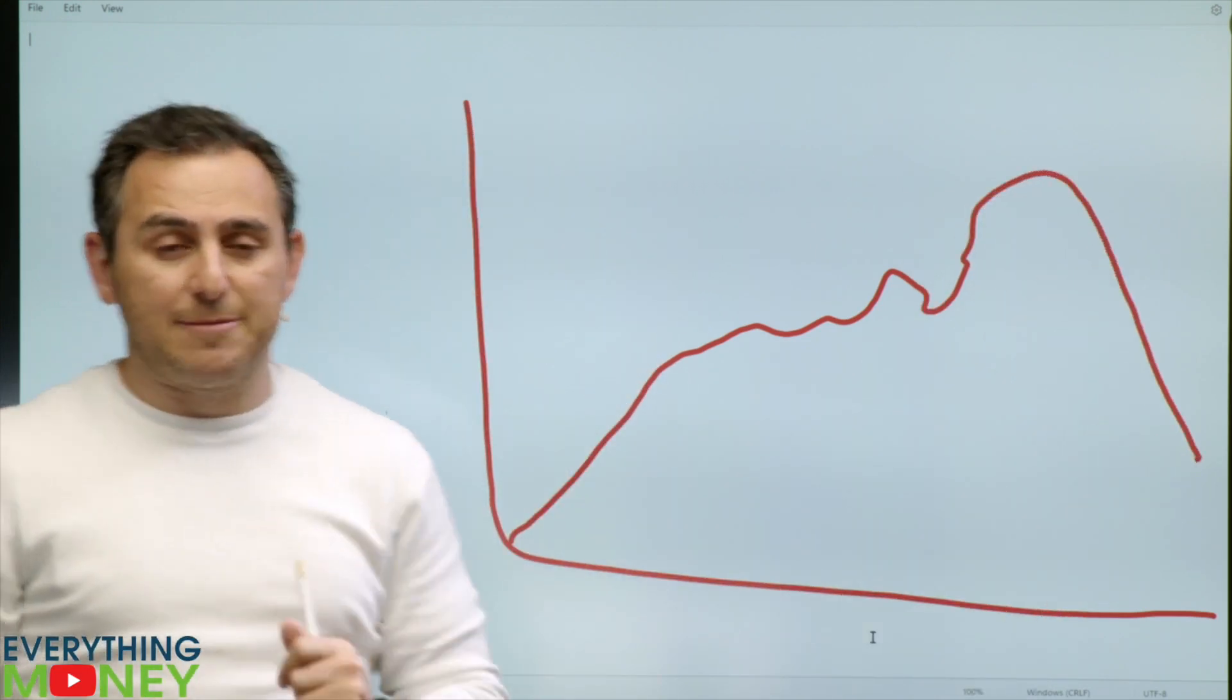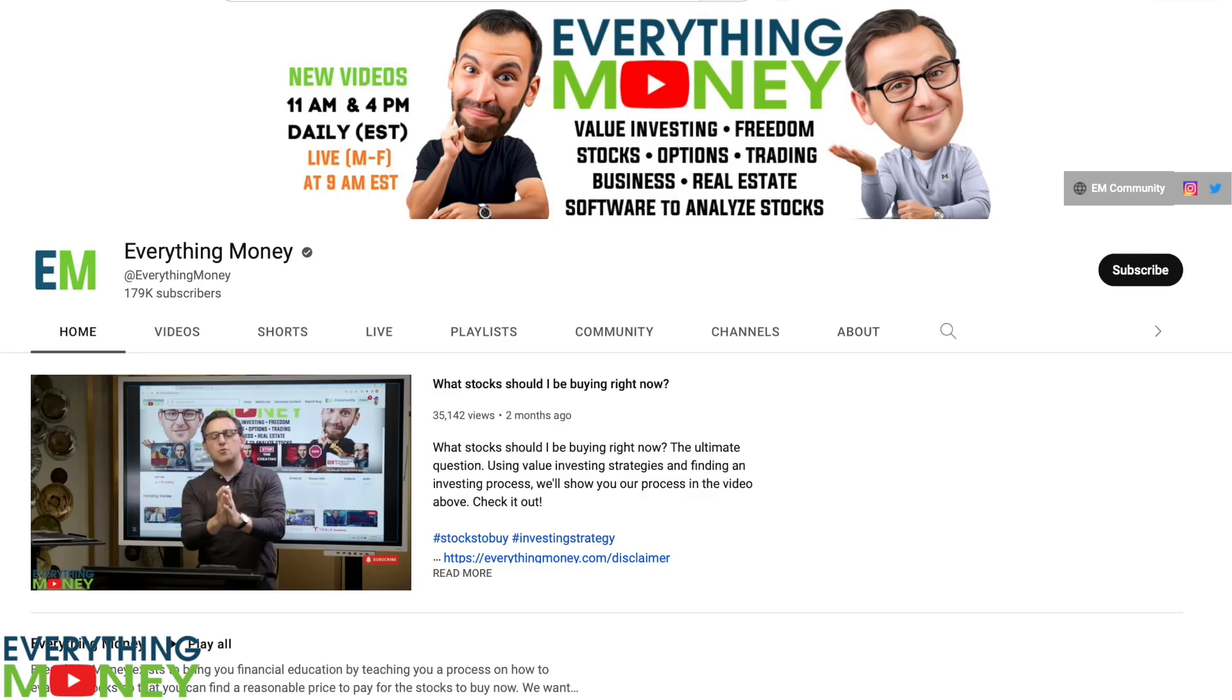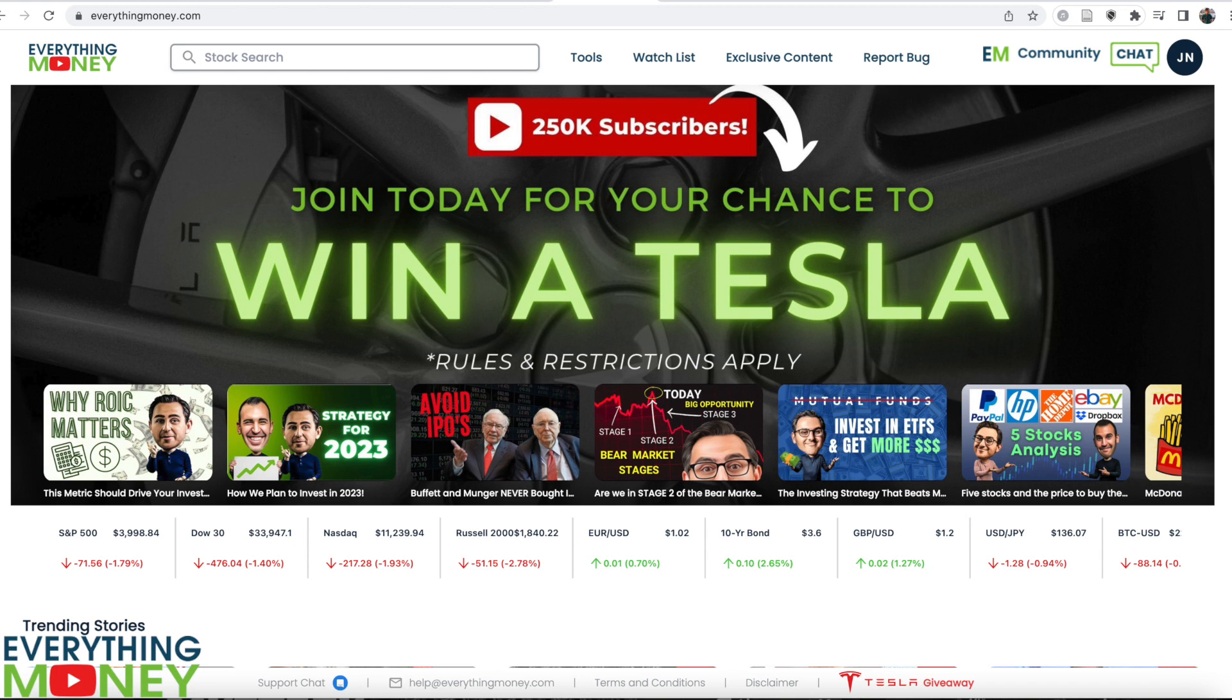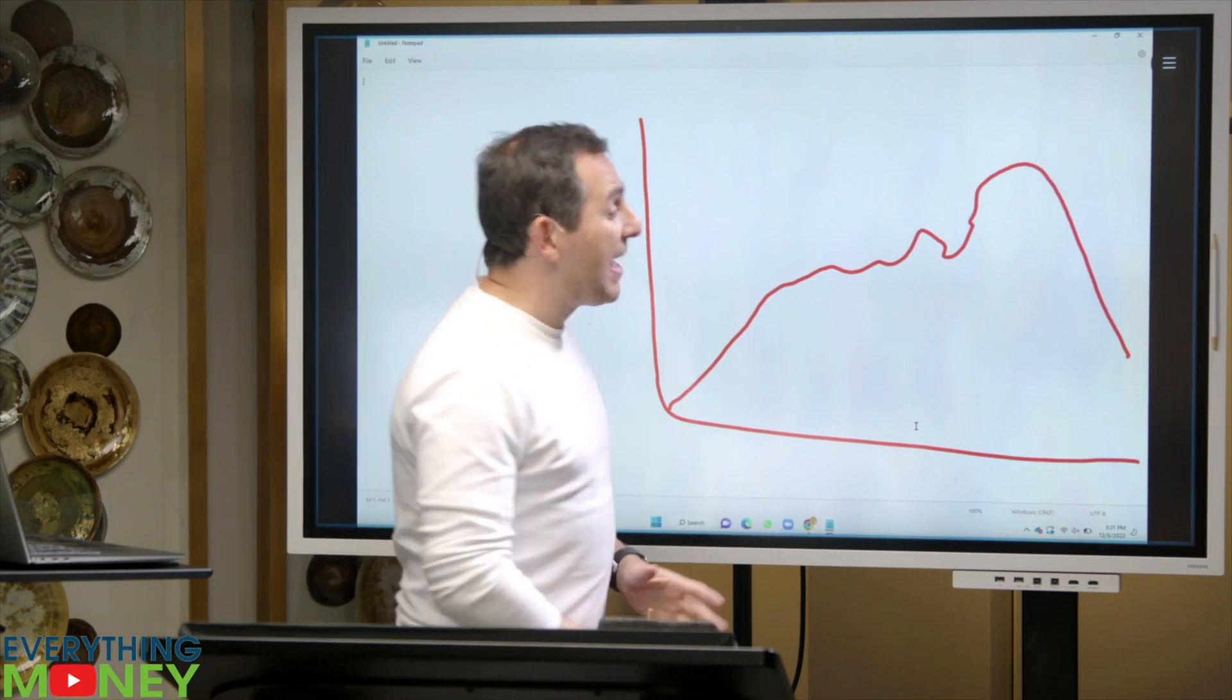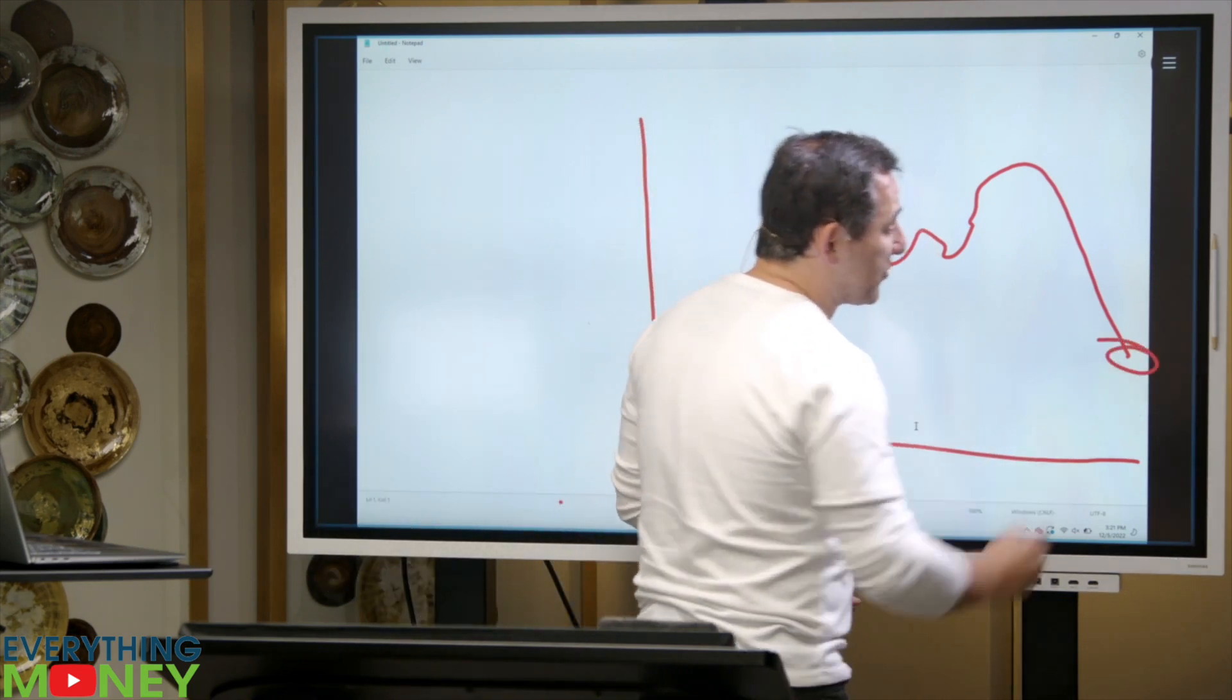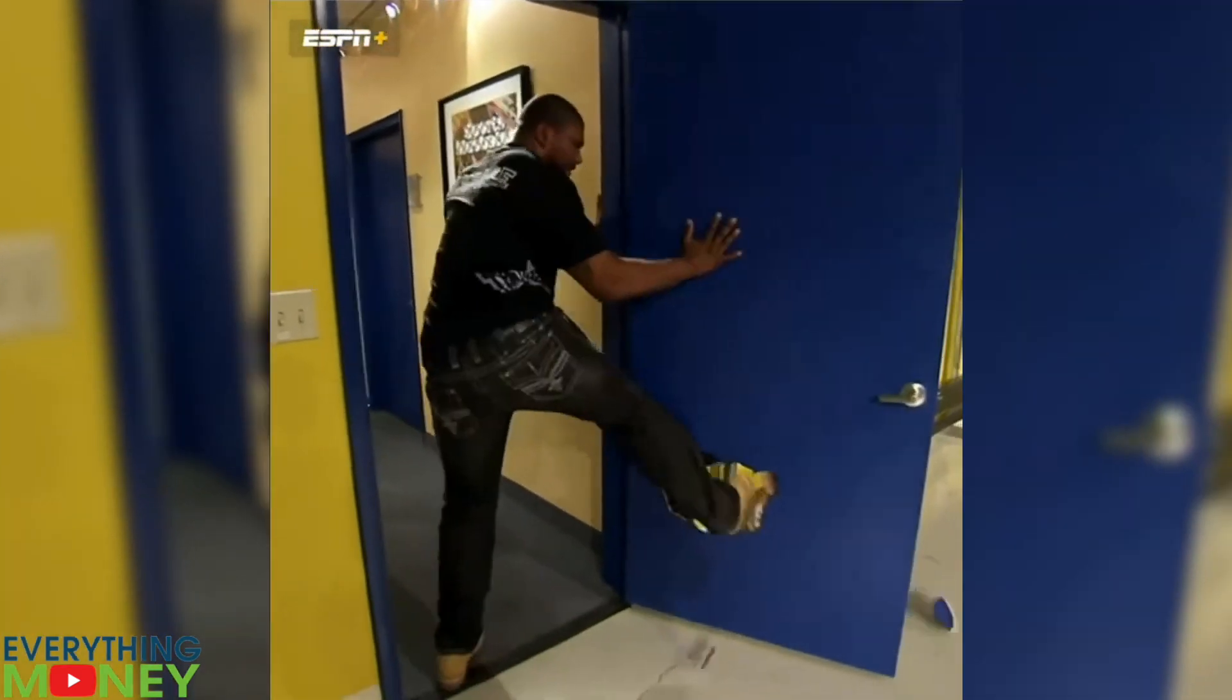So the first thing I'm going to say is you've properly run your analysis using our channel's information, using our channel software that we have right here, using our community. Assuming you've done all that and you think the value of the company is above where it's currently at. The hard part is, what do you do? Because it sucks to see your money go down.